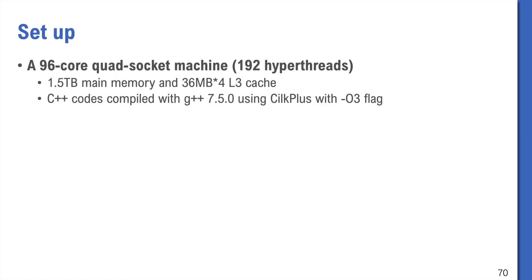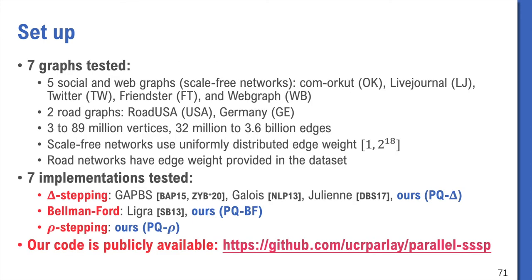Finally, I want to talk about some interesting results in experiments. We use a single parallel machine with 96 cores. So there are 192 hyper-threads. All our implementations are written in C++. We test these seven graphs. Five social and web graphs. We call them scale-free networks because they share many similarities. And two road graphs. The graphs are generally large, but the sizes of them still vary a lot. We set uniformly distributed edge weight within 2 to 18 on the scale-free networks. And for road networks, the distances are from the original dataset.